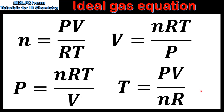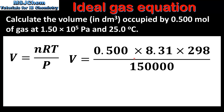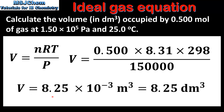Next we look at some examples. In the first example we will calculate the volume in cubic decimeters occupied by 0.5 moles of gas at 150,000 Pascals and 25 degrees C. We will use the volume equation: the amount in moles is 0.5, the universal gas constant is 8.31 joules per kelvin mole, and the temperature in kelvin is 298. We multiply these together and divide by the pressure, which is 150,000 Pascals. This gives us a volume of 8.25 times 10 to the negative 3 cubic meters.